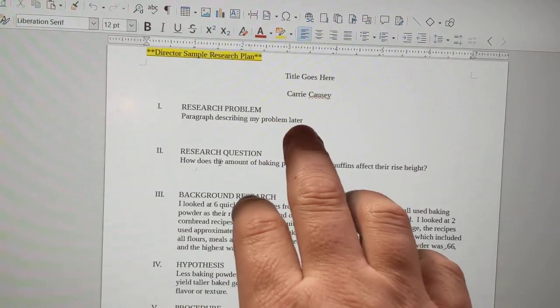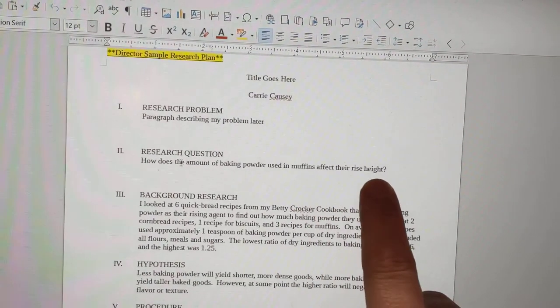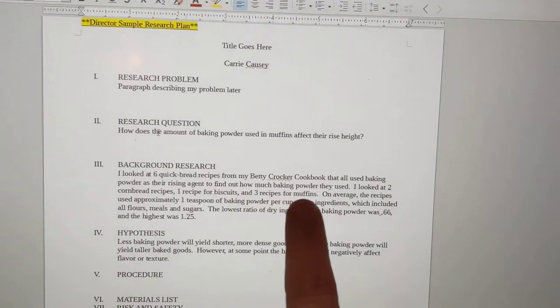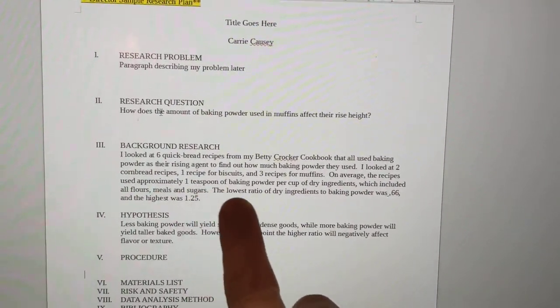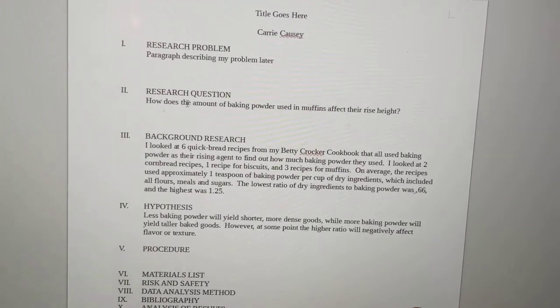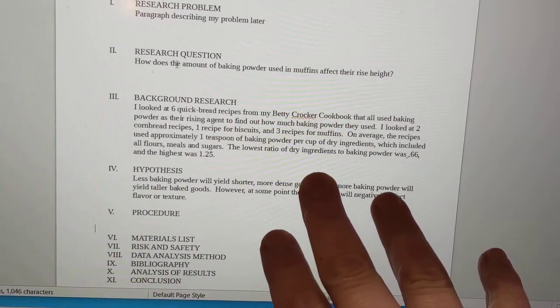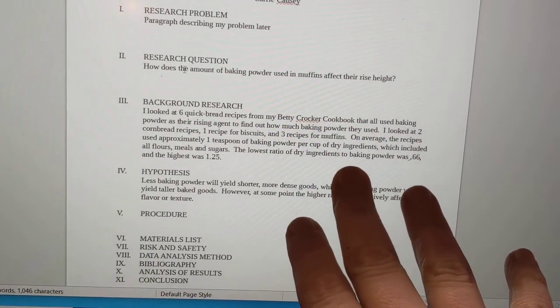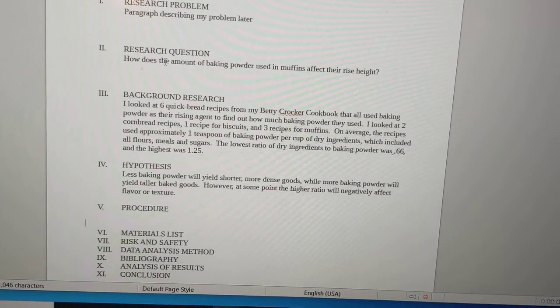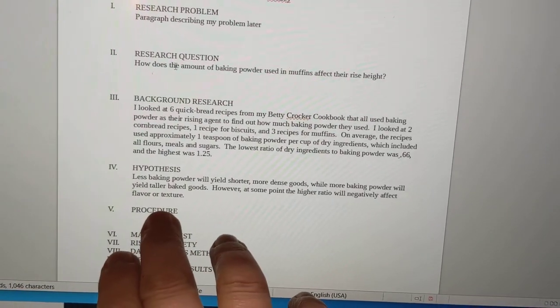And it's on the research plan sample that's in your science fair guide. So all of this is in there. And then I literally just sort of made reasonable sentences. The research problem where you describe your problem isn't assigned this week. So I literally wrote, I'm going to describe it later. And then there's my question. How does the amount of baking powder used in muffins affect their rise height? And then I summarized my research. I looked at six recipes. They all used baking powder. I looked at two cornbread, one biscuits, and three muffins. On average, here it is. The lowest ratio is this and the highest ratio is this. So this research is all over in my science fair notebook. I don't have to rewrite everything here. This is literally like a conclusion. It's like the conclusion that I wrote so that they can see at a quick glance what I came to. And if they have a question, how I got to that information, they can go and look in my lab journal. I hope that makes sense. So this is just a few sentences that gives the conclusion to my background research and how that helped me.